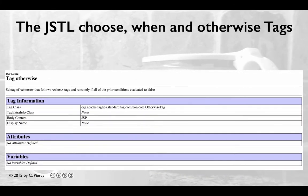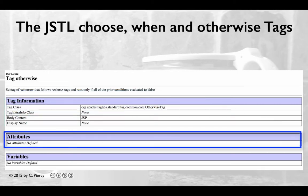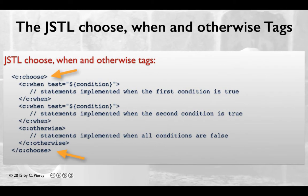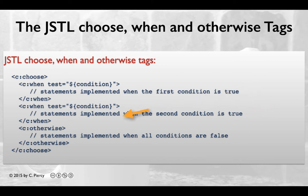The otherwise tag provides a default value where we can place statements that will be implemented if all previous when tags are evaluated to false. Note that this tag also has no attributes, much like the choose tag. We surround the entire block with the core choose tag, then include within that any number of when tags. If the first condition is true, we'll implement the statements inside the first when block. If the second condition is true — and since they're mutually exclusive that means the first one would have been false — then the statements in the second when block are implemented. Finally, if the first two conditions are both false, then the statements within otherwise would be implemented.